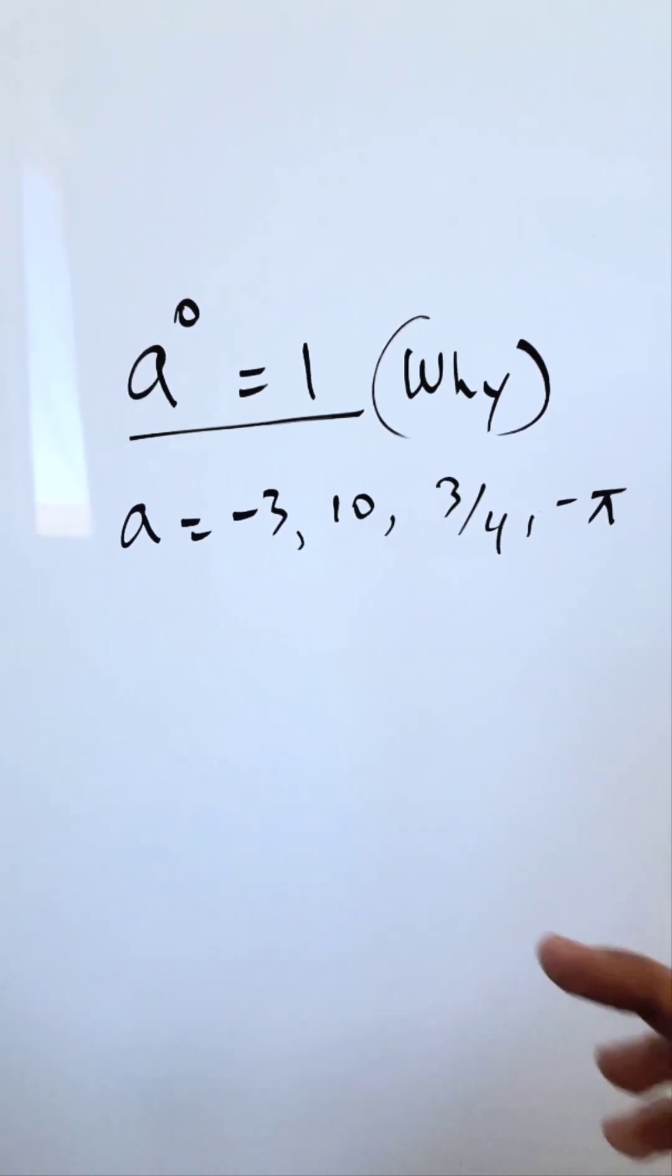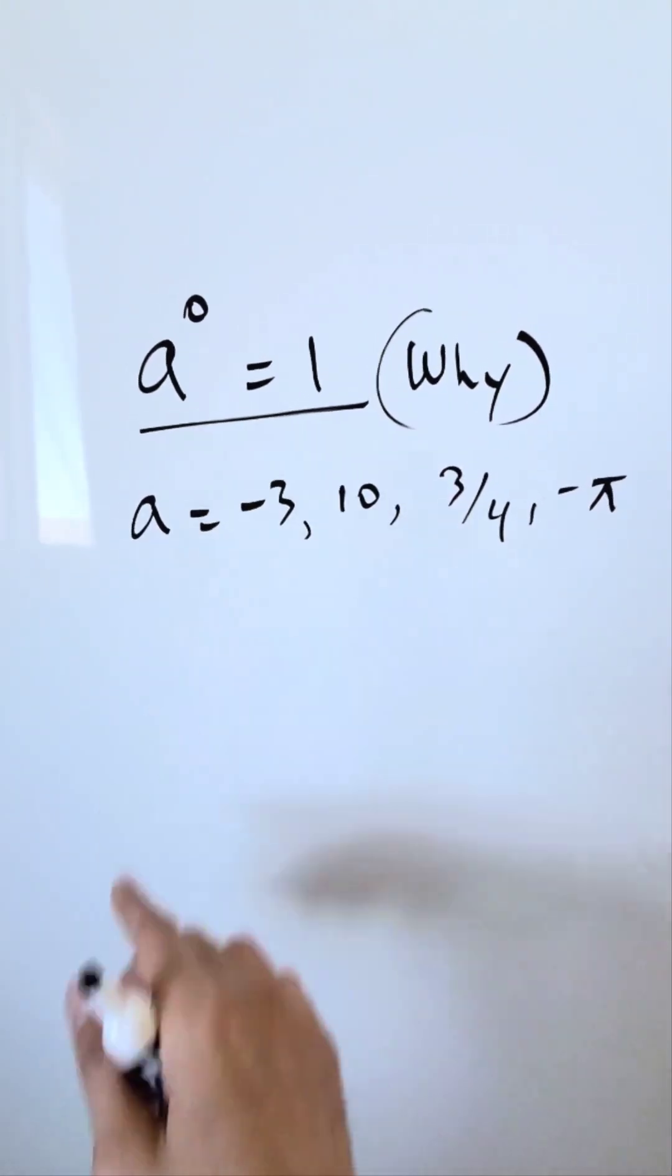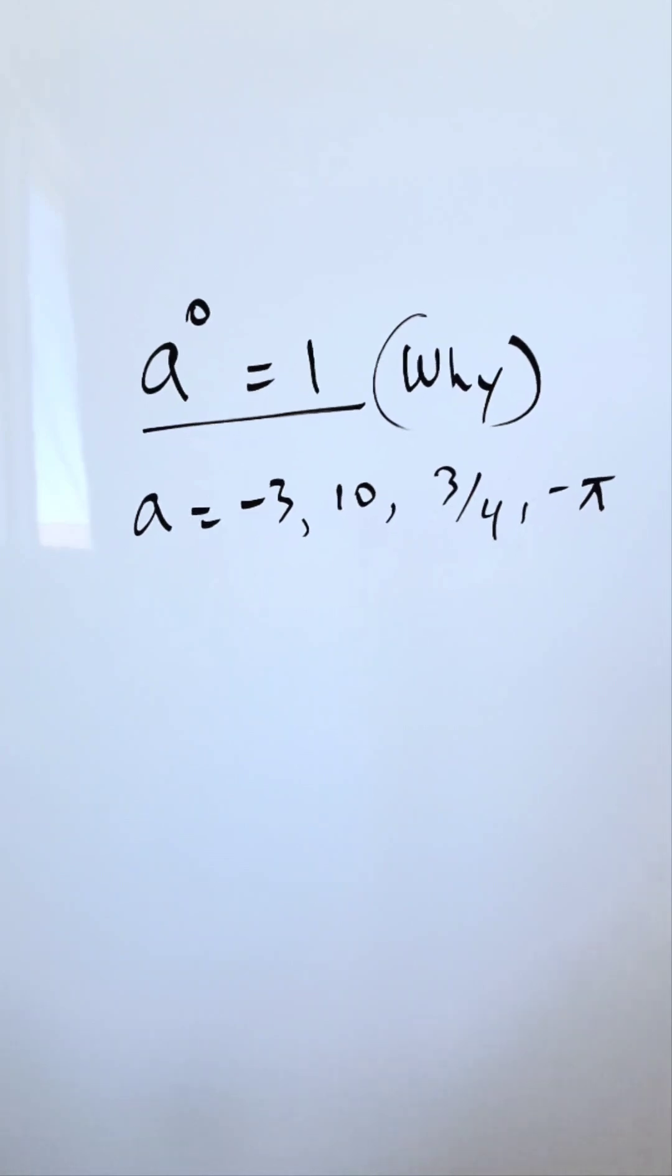Something to the power of 0 is always equal to 1. Why is that the case? We are representing that as this: a to the power of 0 is equal to 1.